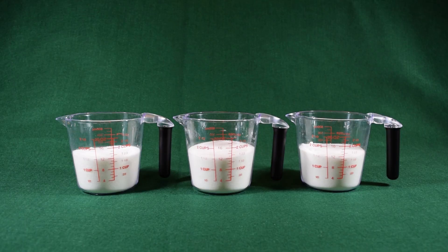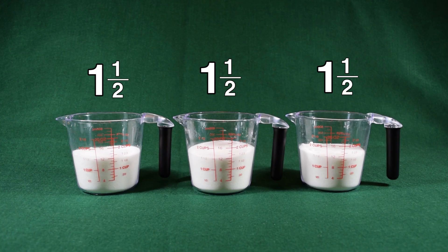You are making sugar cookies. Each batch uses one and a half cups of sugar. If you make three batches, how many cups of sugar will you need to buy altogether?